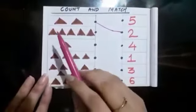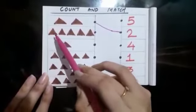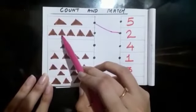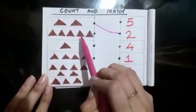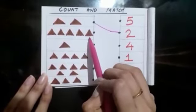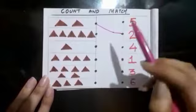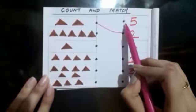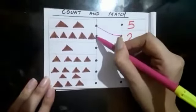Next, 1, 2, 3, 4, 5. Where is 5? Yes, 5 is there. Let's match.